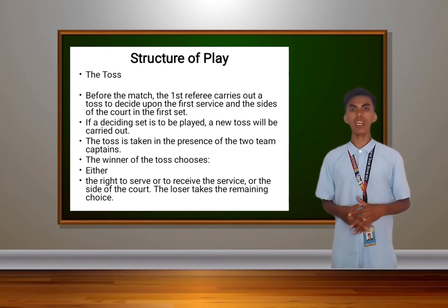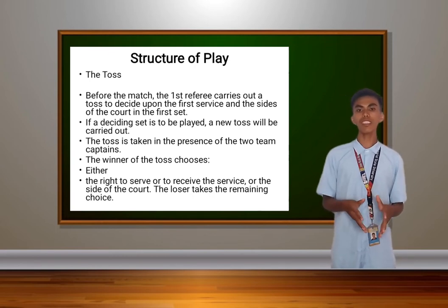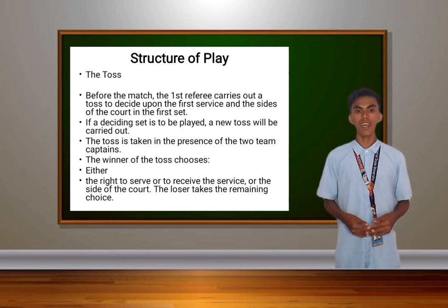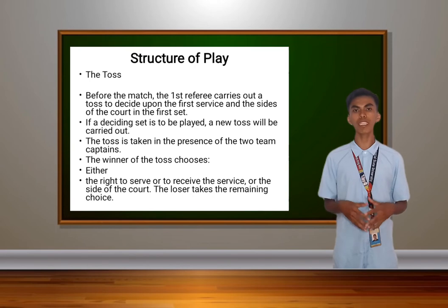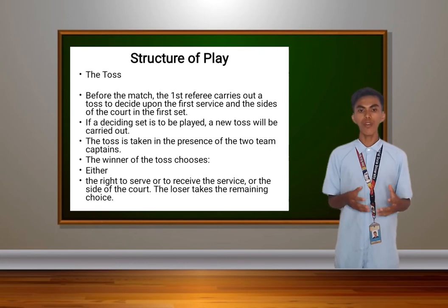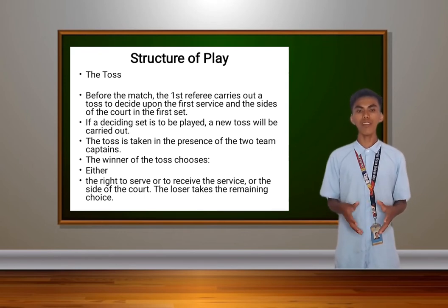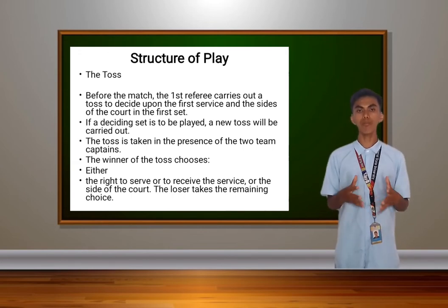Next is the structure of play. First is the toss. Before the match, the first referee carries out a toss to decide upon the first service and the side of the court in the first set. If a deciding set is to be played, a new toss will be carried out. The toss is taken in the presence of the two team captains. The winner of the toss chooses either the right to serve or to receive the service, or the side of the court. The loser takes the remaining choice.